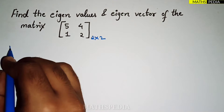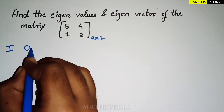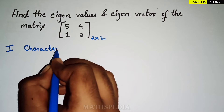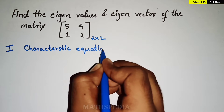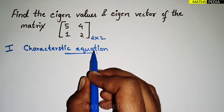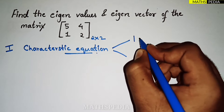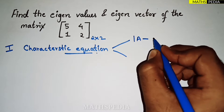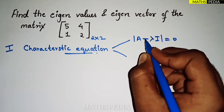The first step is to find the characteristic equation. For any 2×2 matrix, there are two methods you can follow. The first method is the traditional one: determinant of (A minus λI) equal to zero.